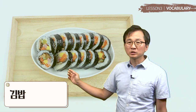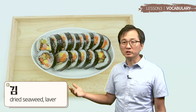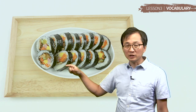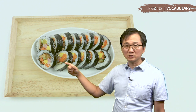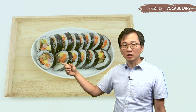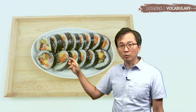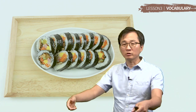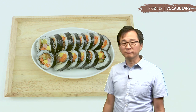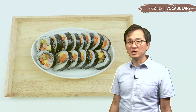김밥이네요. 김은 dried seaweed. 그 다음에 여기는 you can see rice. At the center of 김밥 you can see 당근도 있네요. 당근은 carrot. 그 다음에 spinach도 넣고, 고기도 넣고, 이렇게 roll 하는 거예요. 김밥은 very easy to eat. 그래서 one of the very popular Korean foods.